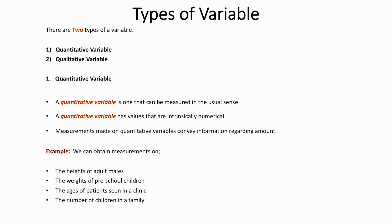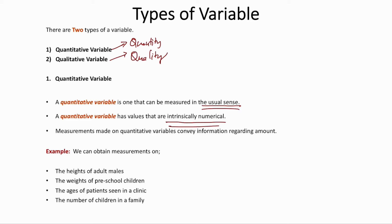There are two types of variables: quantitative and qualitative. A quantitative variable refers to quantity — its values are intrinsically numerical, and measurements convey information about amount. Examples include heights of adults, weights of preschool children, ages of patients seen in a clinic, and number of children in a family — all considered quantitative variables.